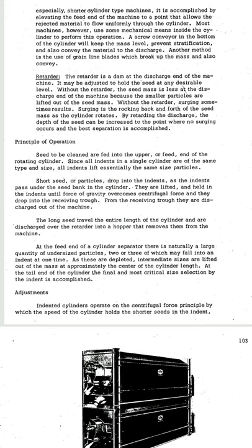Short seed or particles drop into the indents. As the indents pass under the seed mass in the cylinder, they are lifted and held in the indents until the force of gravity overcomes centrifugal force and they drop into the receiving trough. From the receiving trough, they are discharged out of the machine. The long seed travel the entire length of the cylinder and are discharged over the retarder into a hopper that removes them from the machine.